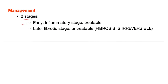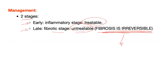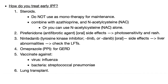Management: we have two stages. Early, which is inflammation, is treatable. But the fibrotic stage is untreatable because fibrosis is irreversible. For early interstitial pulmonary fibrosis, use steroids. Do not use as monotherapy for maintenance — you can combine them with azathioprine and N-acetylcysteine.